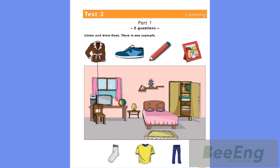4. There's a t-shirt. Yes, I can see it. Please put it next to the robot. The t-shirt is next to the robot now.